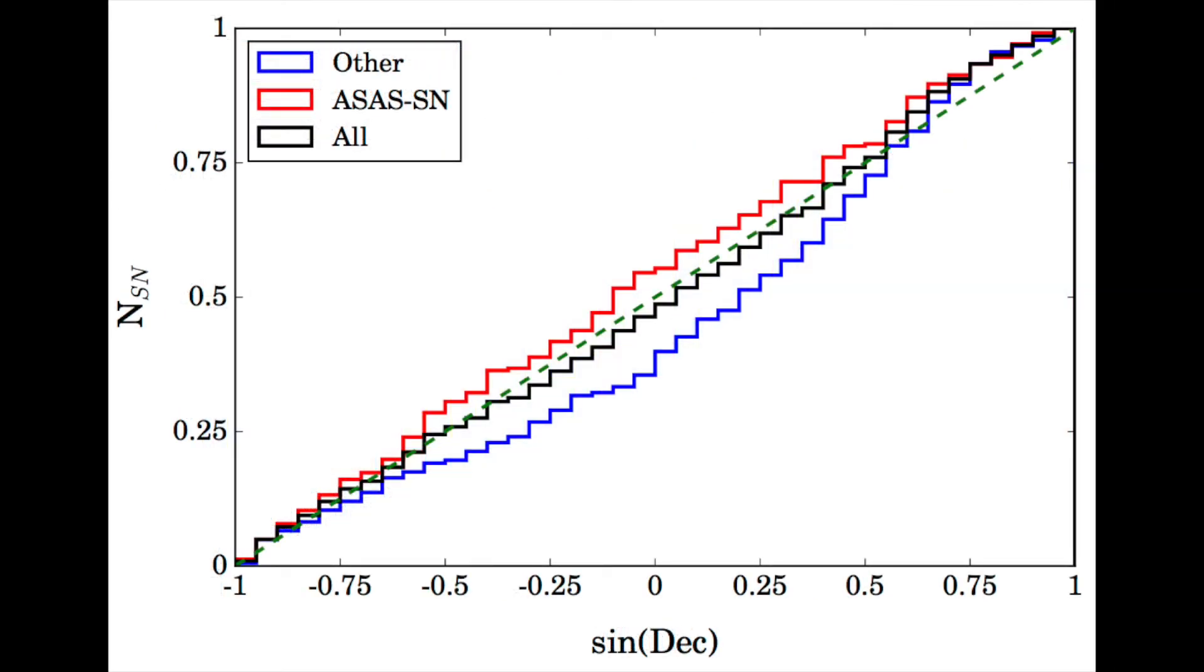ASASSIN discoveries also stand out in terms of their locations. Here we show a cumulative normalized histogram of supernovae with respect to the sign of the declination. The green dashed line represents what would be expected if supernovae were discovered at all declinations equally.